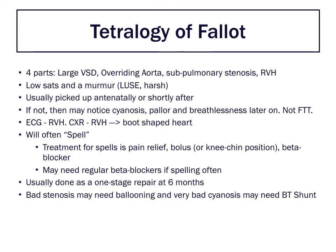You get a mixing of saturations depending on how much of the aorta's supply is coming from the right ventricle rather than the left ventricle. If you have 75% sats, essentially 75% of your blood is coming from the left side rather than the right - though that is a simplification. You also get a murmur because of the pulmonary stenosis: a left upper sternal edge harsh ejection systolic murmur, similar to an aortic stenosis murmur but in the pulmonary region.